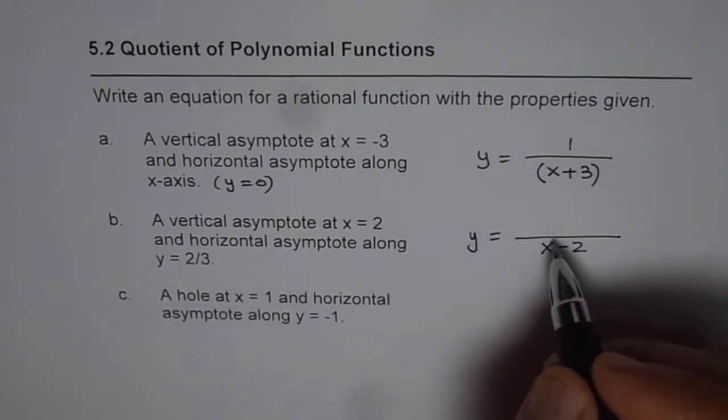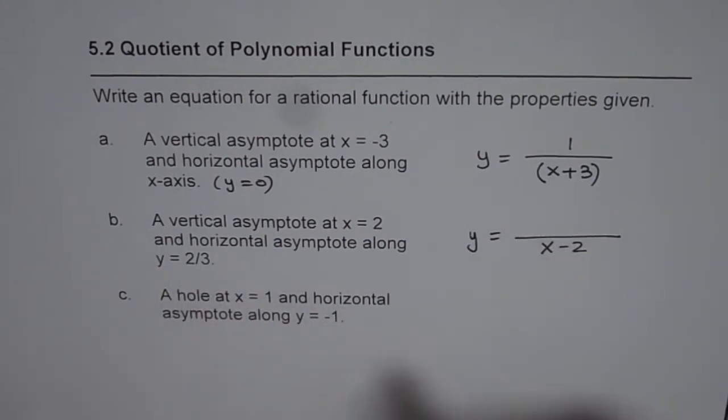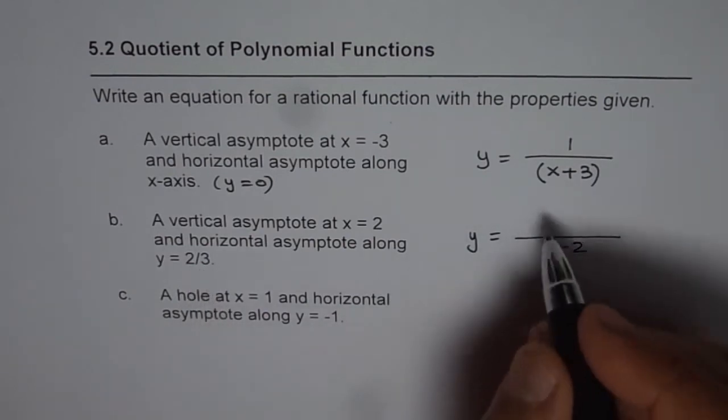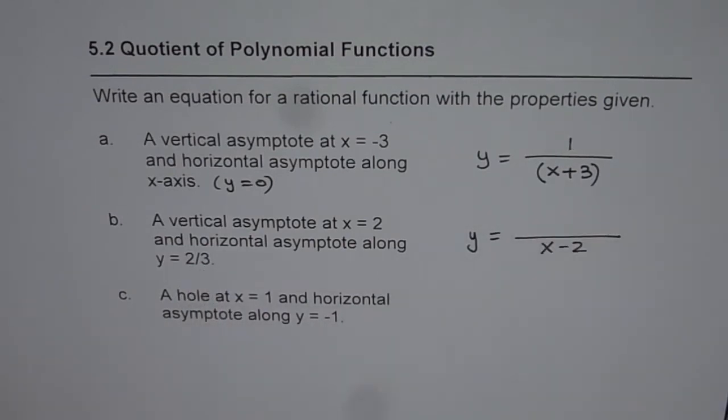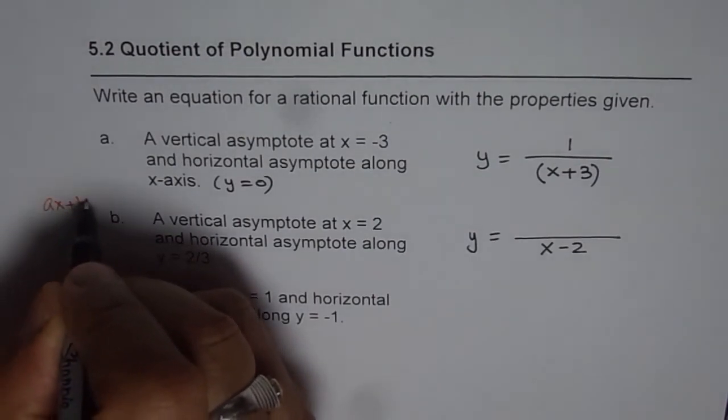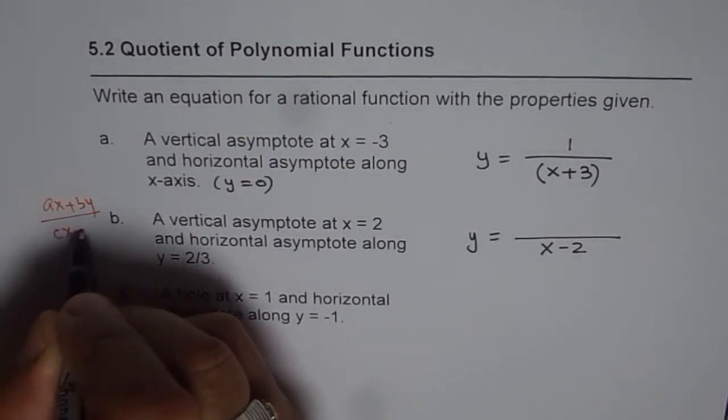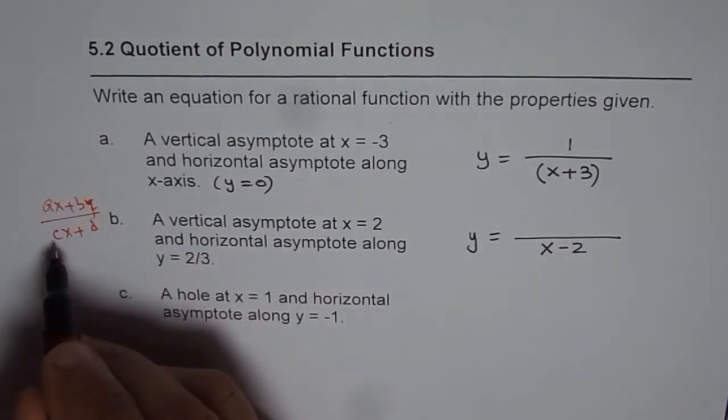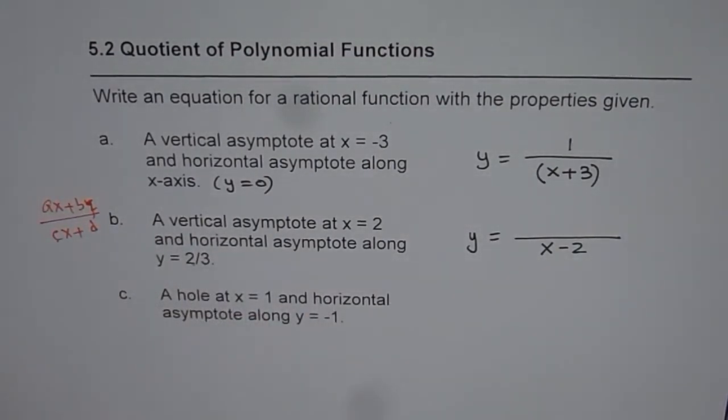That really means that the ratio of leading coefficients should be 2 over 3. When the horizontal asymptote is a fraction like this, we are looking for, let me write in general form, ax plus b over cx plus d. Then a over c is 2 over 3.